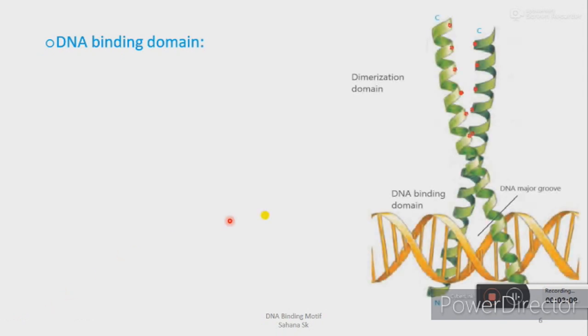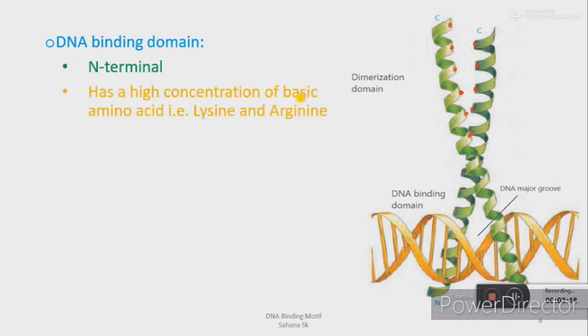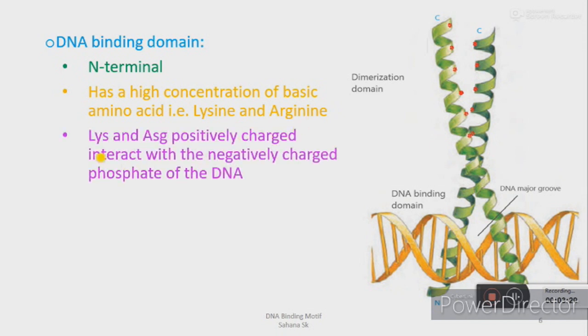Now let's discuss the features of the DNA binding domain. As you can see, they are present at the N-terminal and have a high concentration of basic amino acids such as lysine and arginine. As lysine and arginine are positively charged, they can easily interact with the negatively charged phosphate group of the DNA, so they directly interact in the major groove.